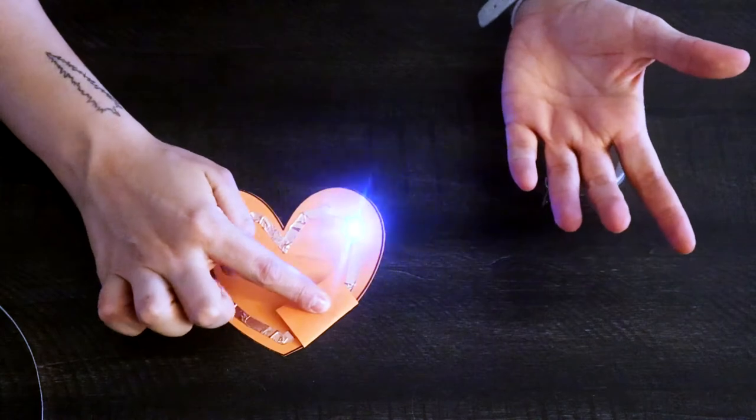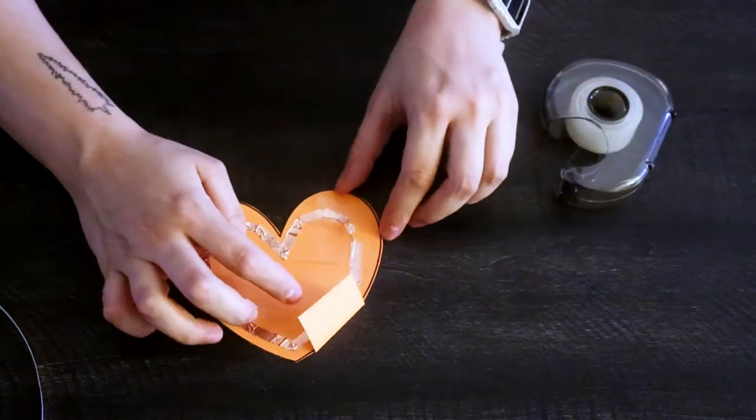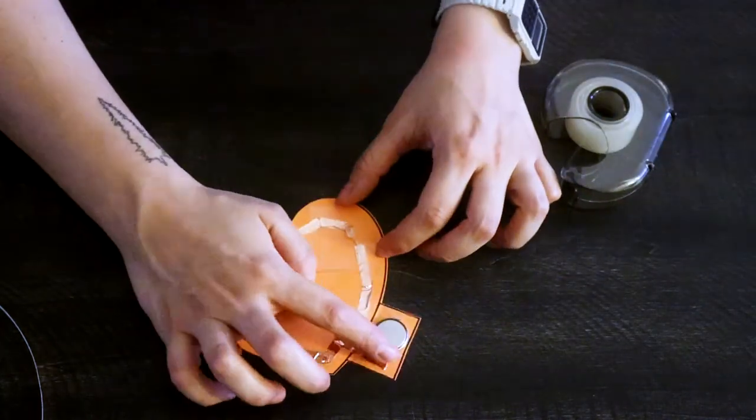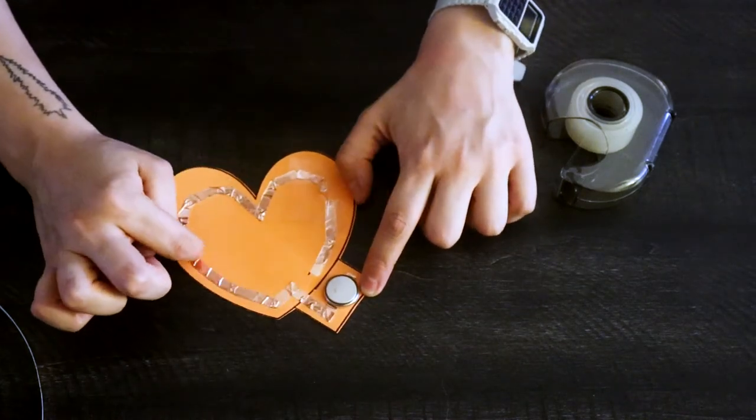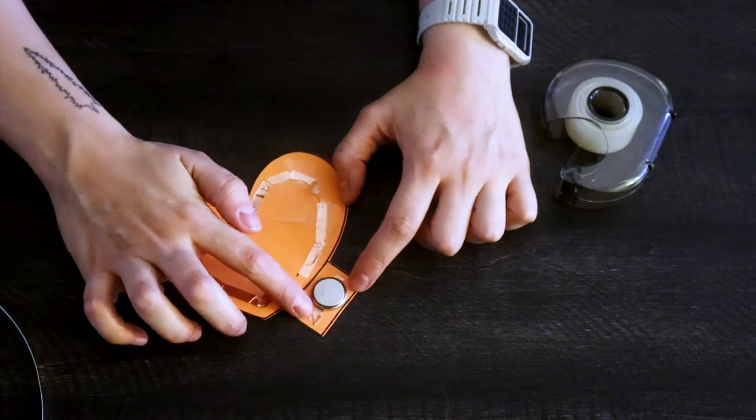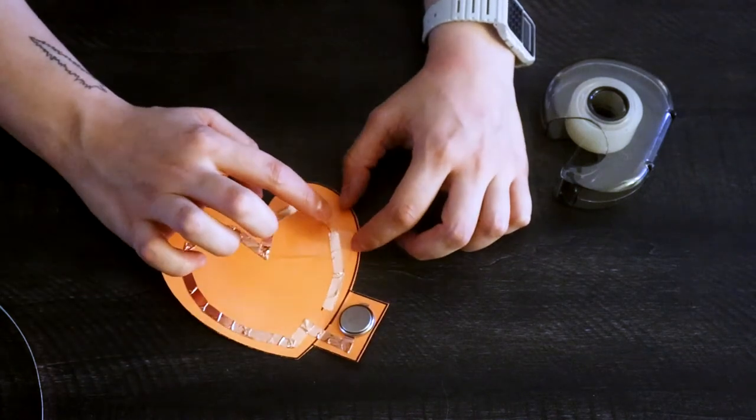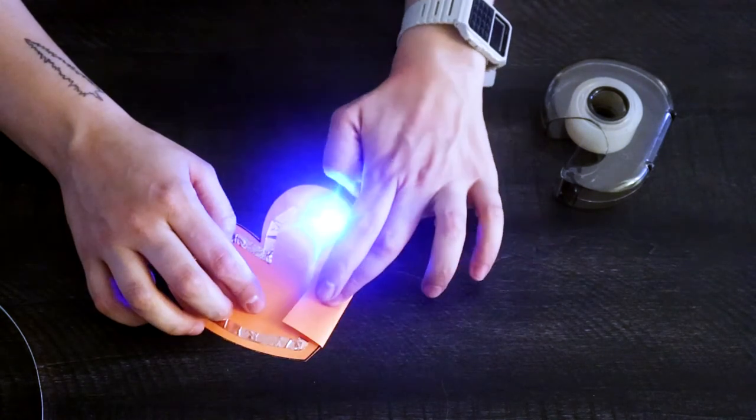And now I have my complete circuit. And it comes on and off. We've got the power source right here. We've got the conductor right here. We've got the load right here and the switch right here.